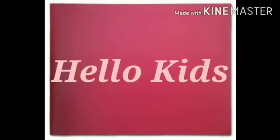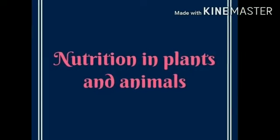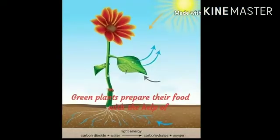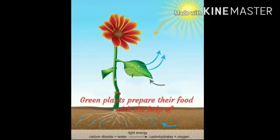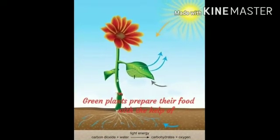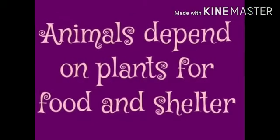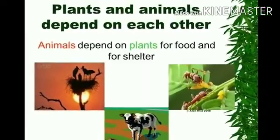Hello kids. Our topic is nutrition in plants and animals. Plants prepare food with the help of carbon dioxide, water and sunlight. Animals depend on plants for food and shelter.